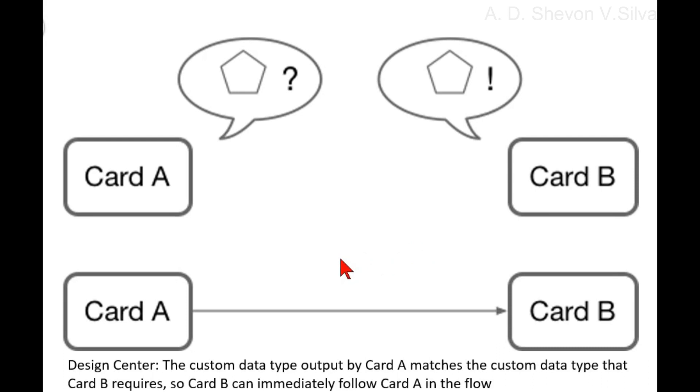For example, suppose that the flow contains card A and card B, and that card B follows card A.